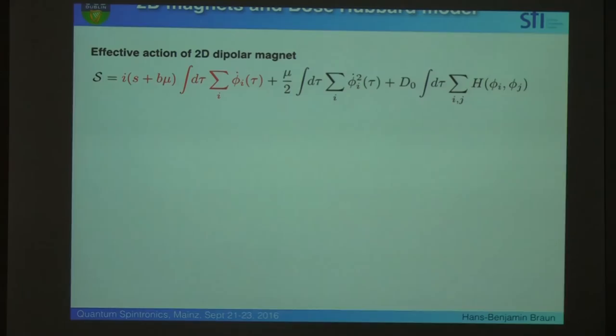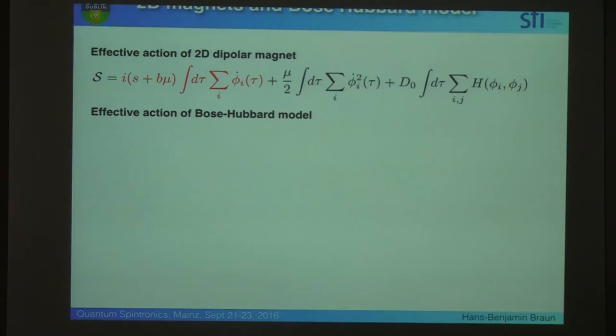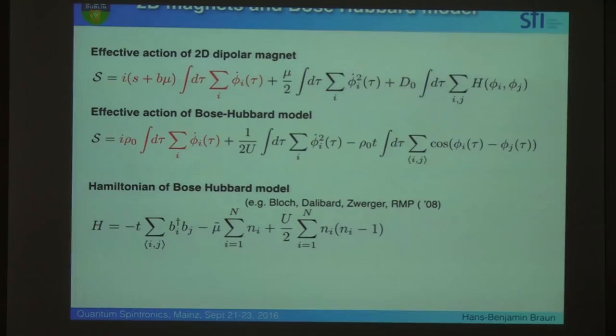Now, effective action of a dipolar magnet looks like this. Effective action of a Bose-Hubbard model looks like that. So, what's the difference? Well, the difference is we have here the dipolar interaction, here we have a nearest neighbor, but that's not really relevant.